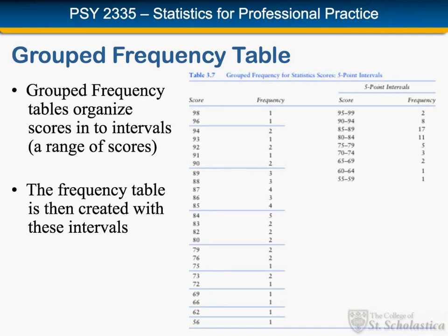One thing to notice is that the table says it's organized with five-point intervals, but many people do a subtraction and say 59 minus 55 is four points, not five. This is where real limits come into play. If this is a continuum, the lower limit of 55 is really 54.5, and the upper limit of 59 is really 59.5. Subtracting 54.5 from 59.5 gives you a five-point interval.